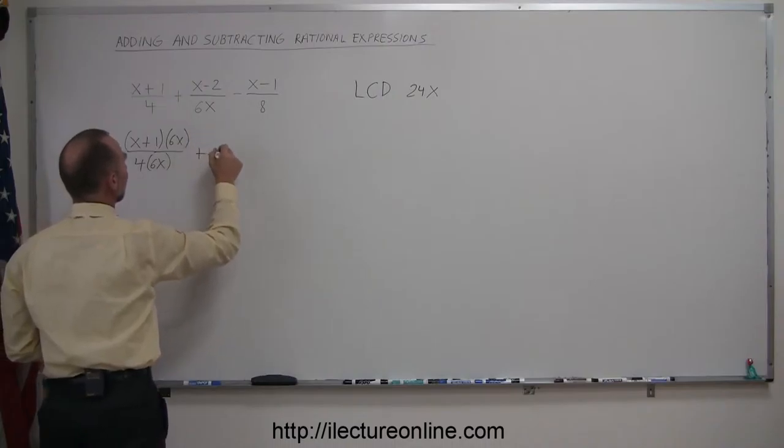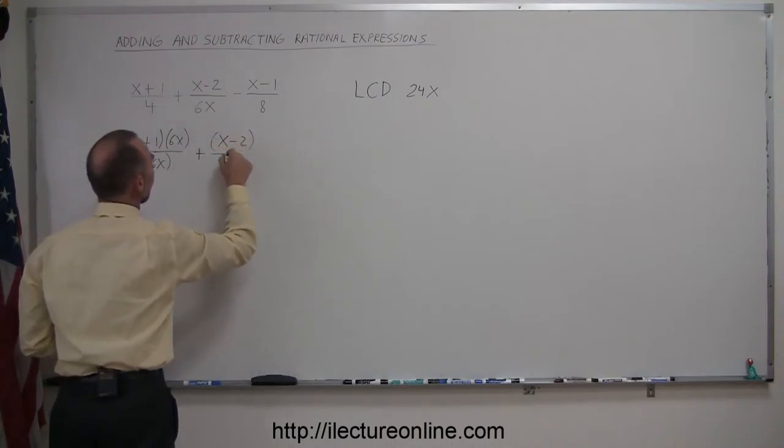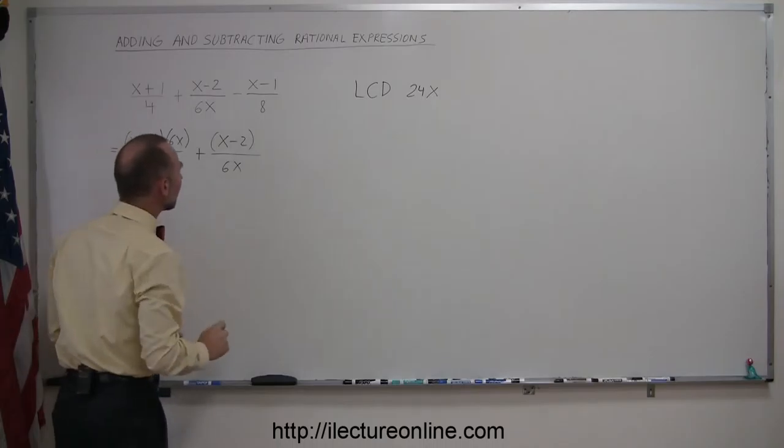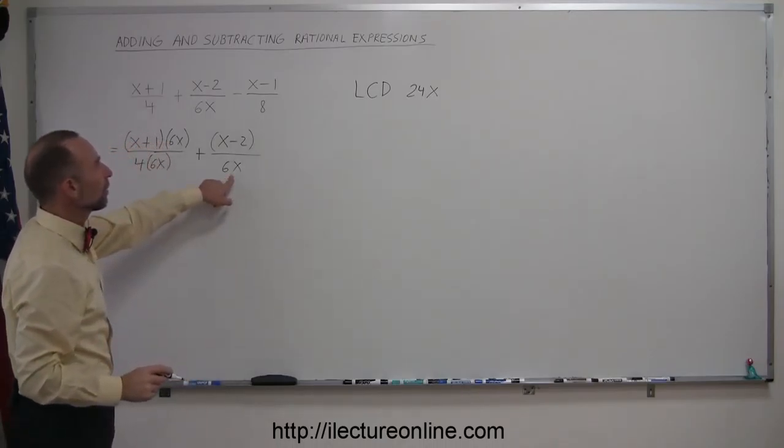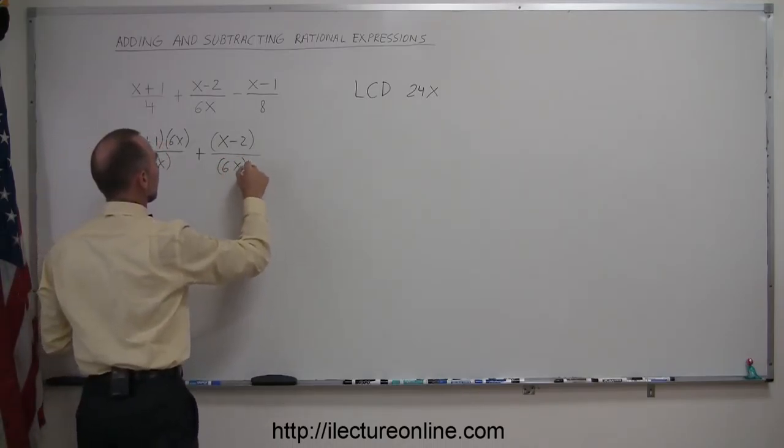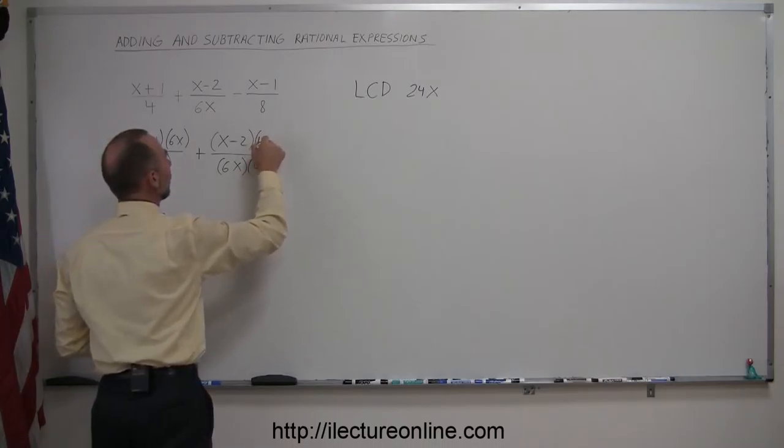Plus the second fraction, x minus 2 over 6x, and we have to multiply this one by 4, which means we also have to multiply the numerator by 4.